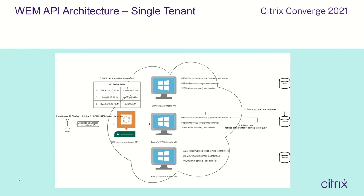Here is the WAM API architecture for single-tenant mode. Suppose we have three customers. The WAM infrastructure service, WAM API service, and WAM administration console are all in single-tenant mode. When customer Tienhe wants to access the server, it will use a URL calculated based on customer IDs and access through the HTTP proxy. For single-tenant API, traffic will route to Tienhe's WAM console virtual machine. The API service will notify the broker after receiving the request, and then the broker will update Tienhe's database.